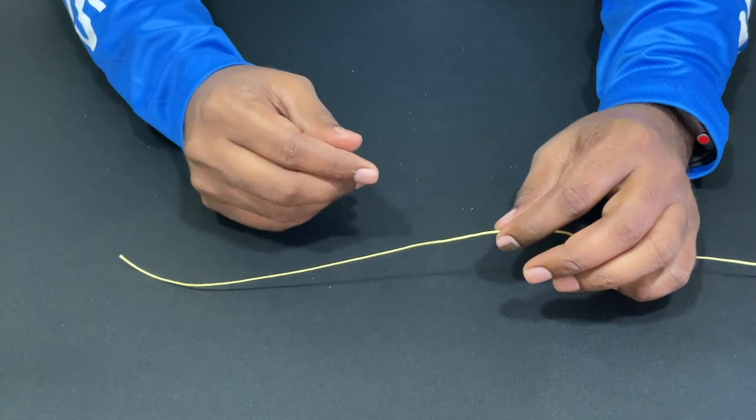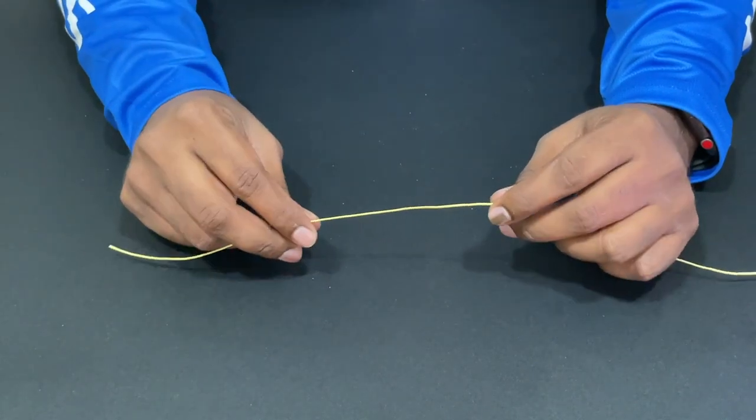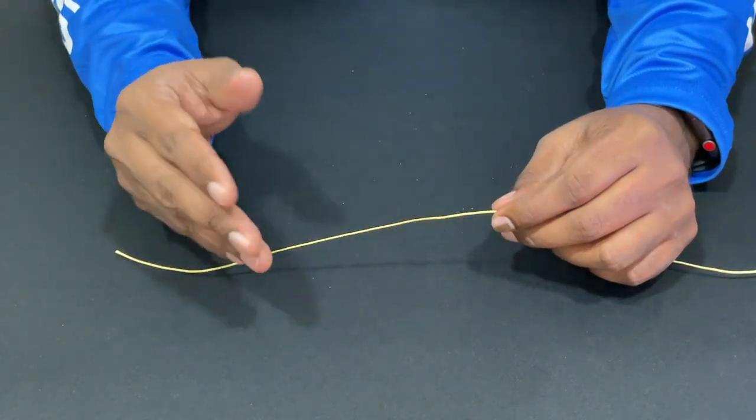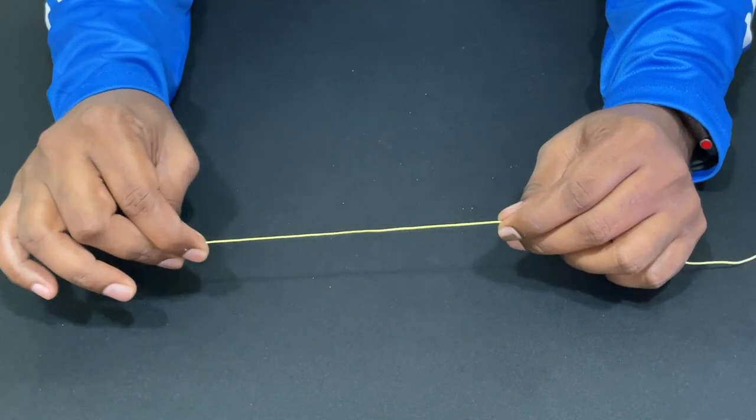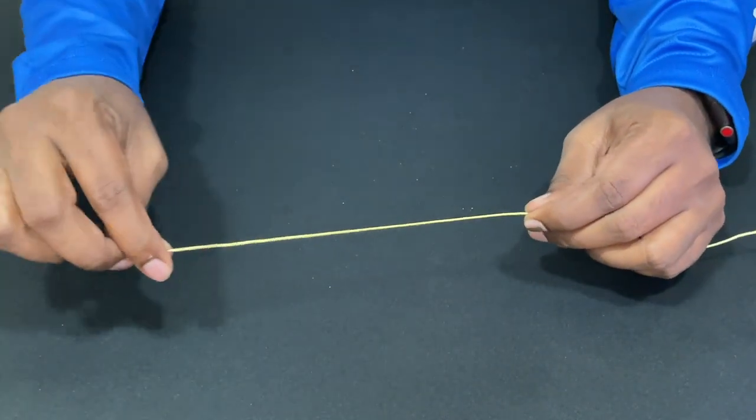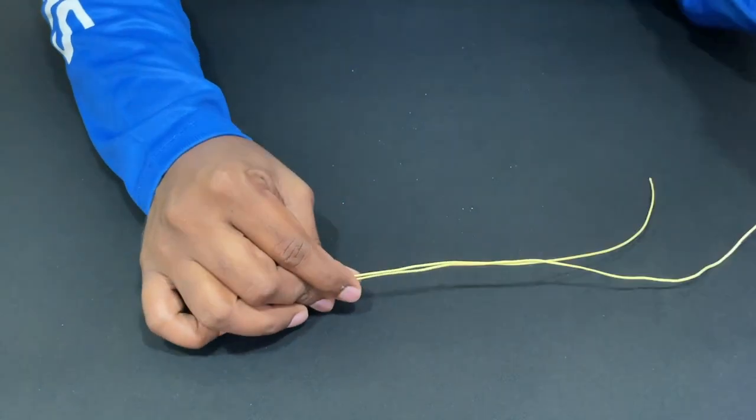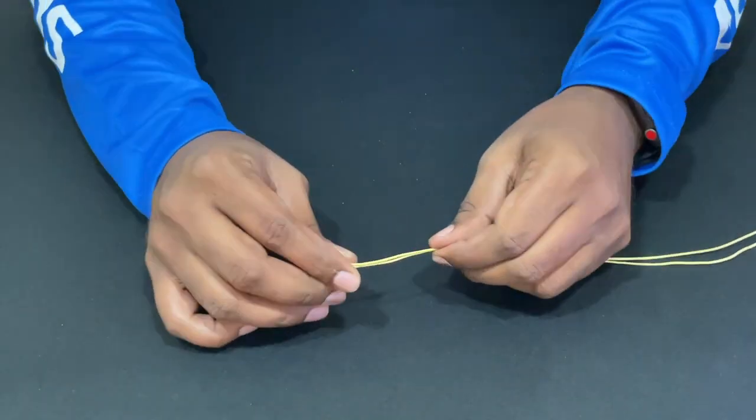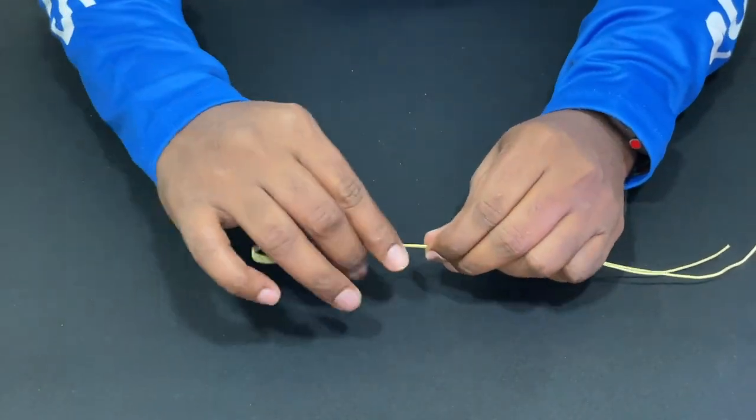I'm going to tie the hooks. First, I'm going to tie 10 inches. I'm going to tie 7-8 inches.